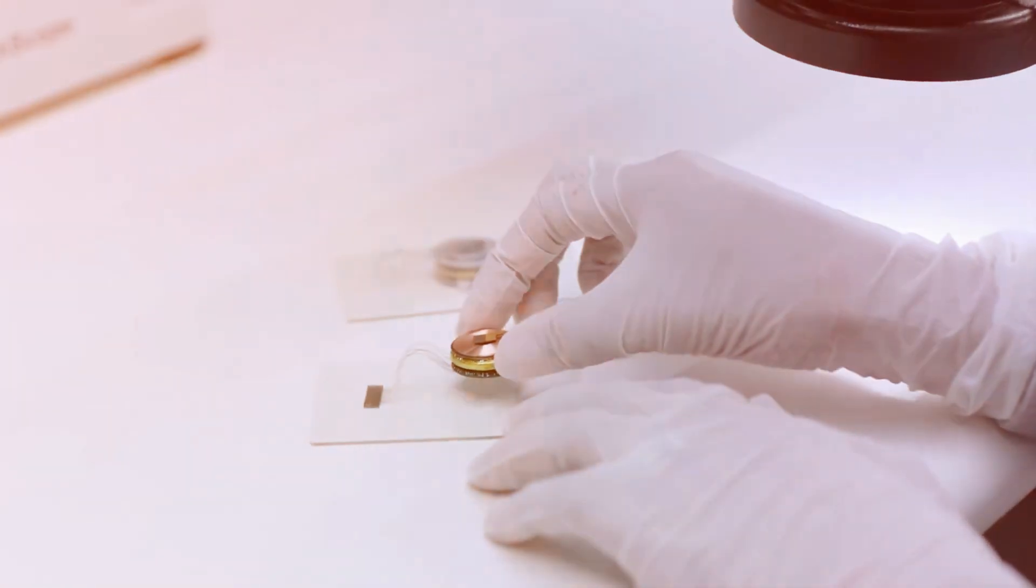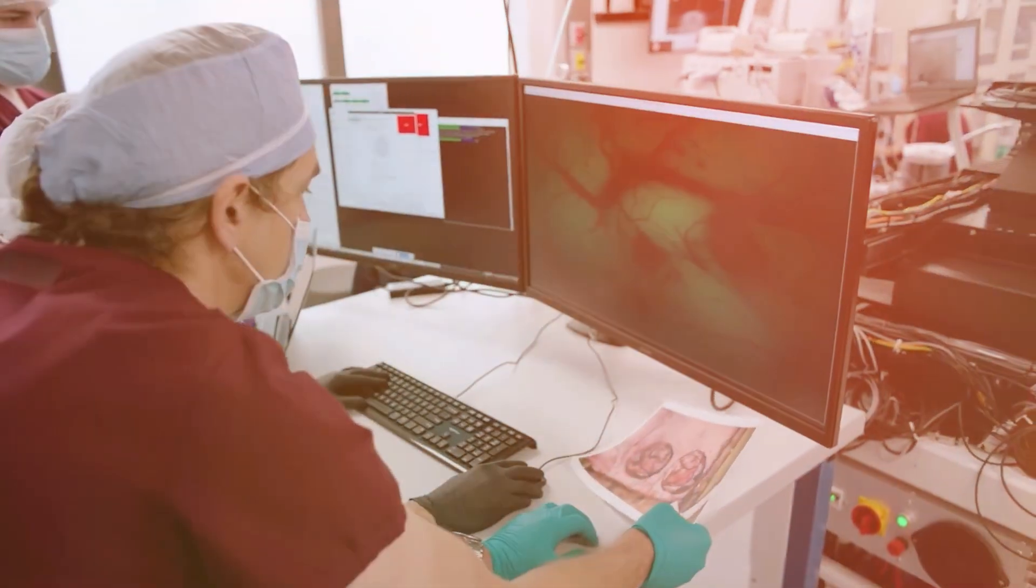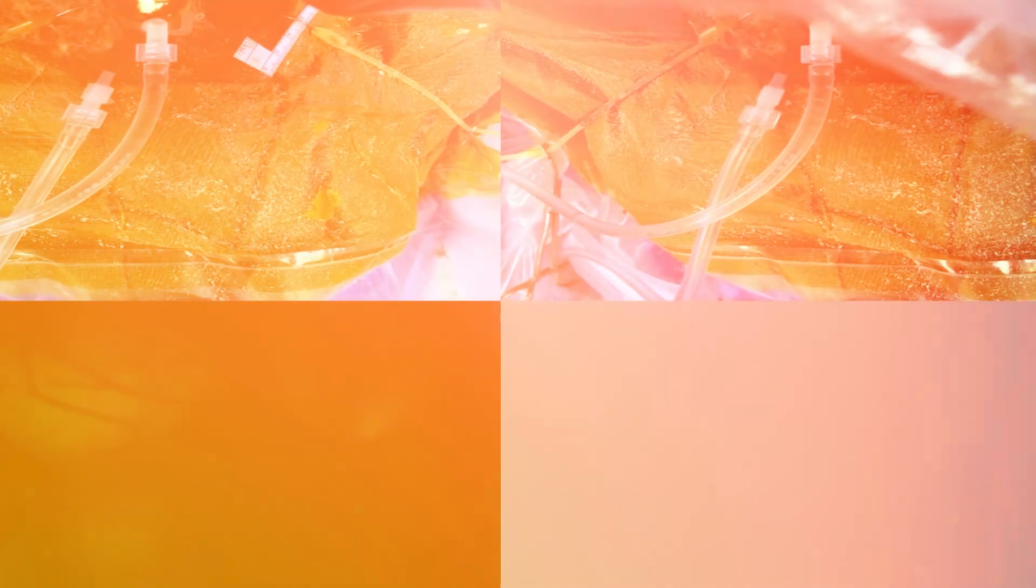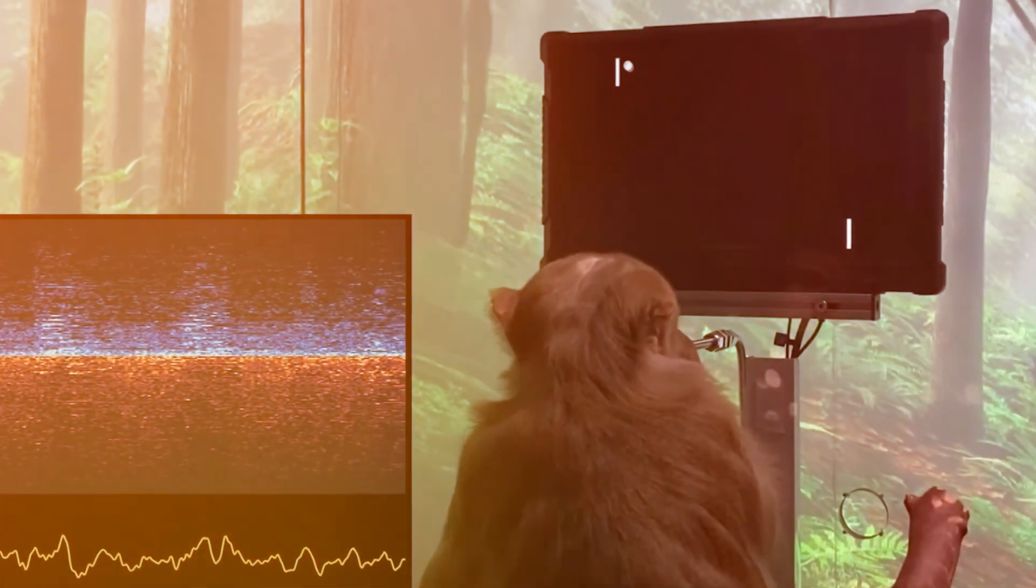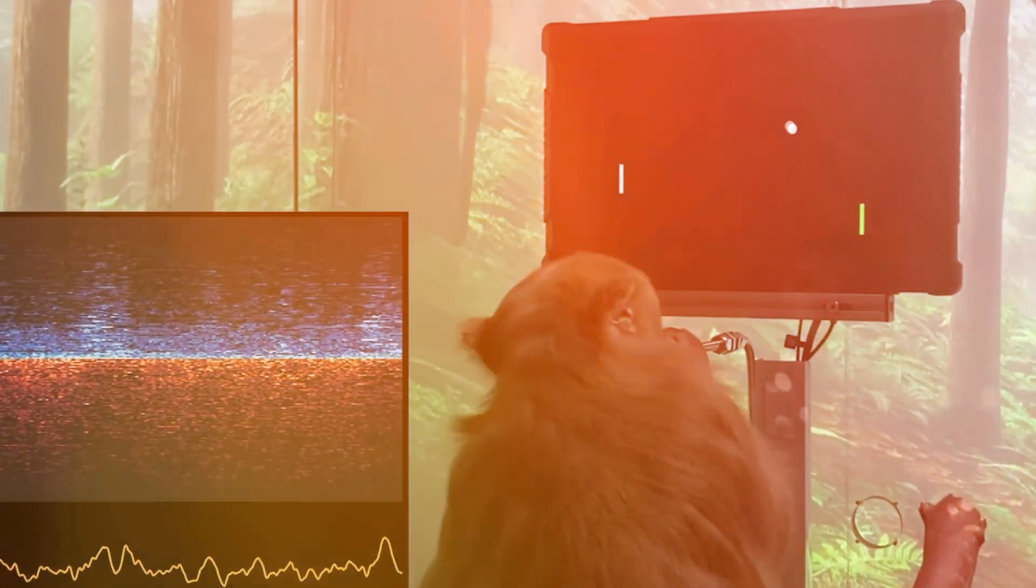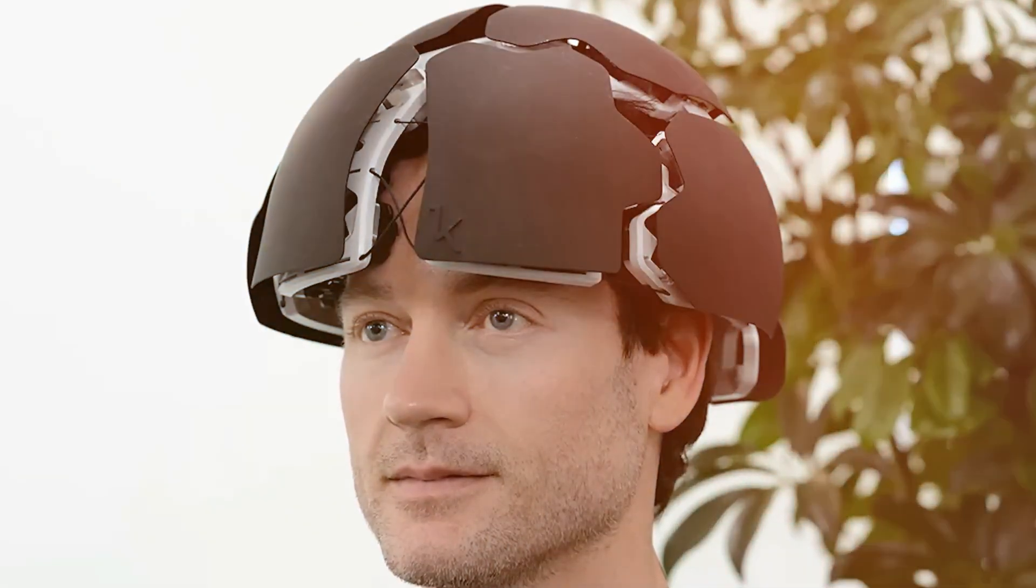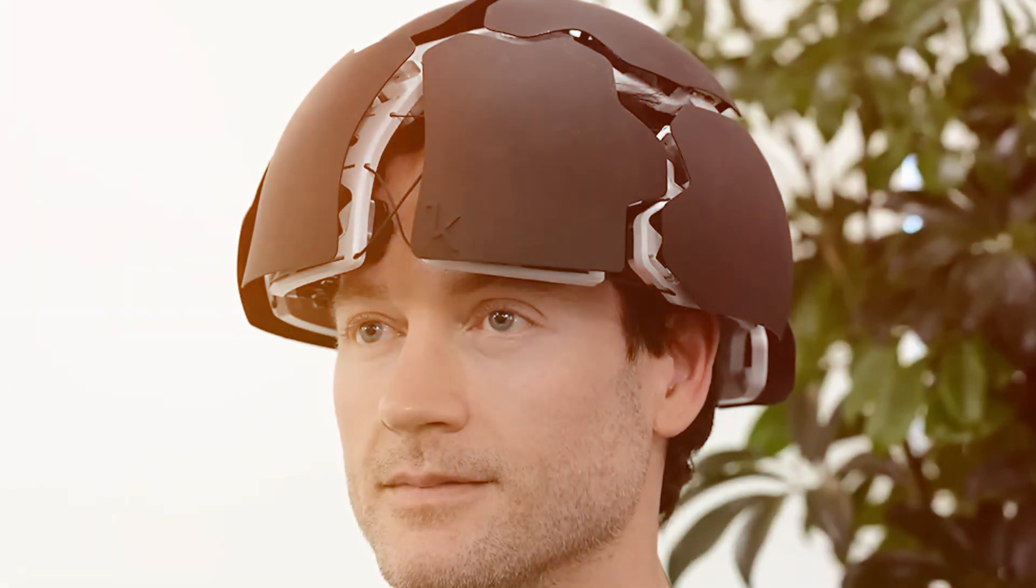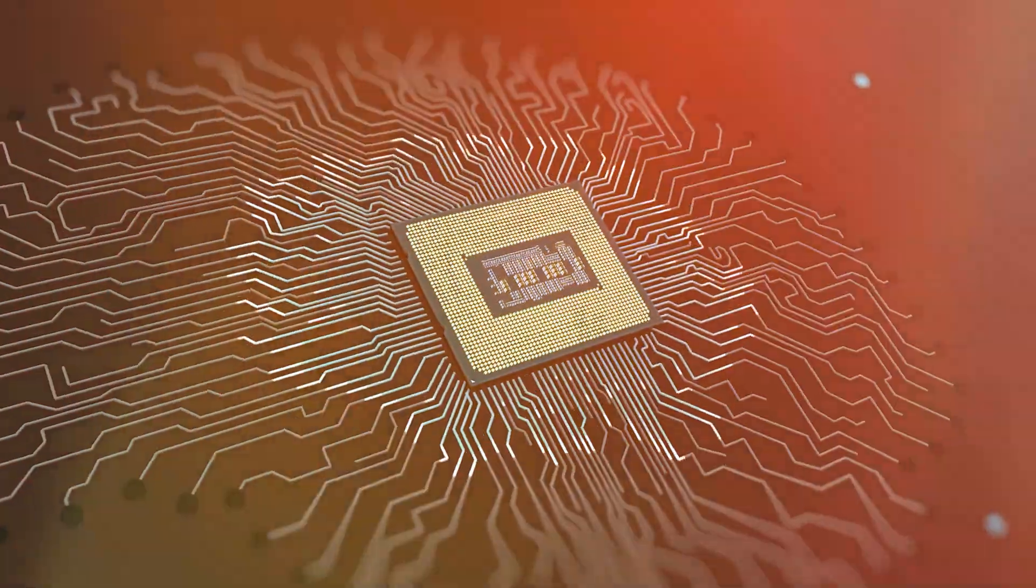Neuralink has set their sights on expanding and improving telepathy's capabilities and functionalities to enable users to communicate with each other through thought alone. This involves increasing the number of electrodes, the bandwidth of data transmission, and the accuracy of signal decoding and encoding. Additionally, Neuralink aims to develop and launch new products and services such as Telepathy 2, which enables users to access and manipulate artificial intelligence systems, and Telepathy Pro.